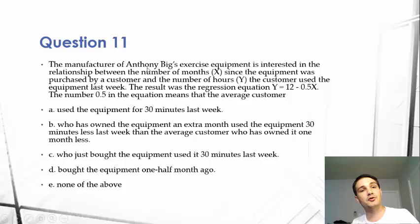The question reads, the manufacturer of Anthony Biggs exercise equipment is interested in the relationship between the number of months X since the equipment was purchased by a customer and the number of hours Y the customer used the equipment last week. The result was the regression equation Y equals 12 minus 0.5X. The number 0.5 in the equation means that the average customer